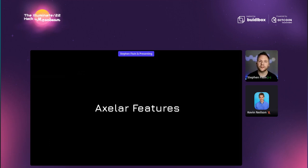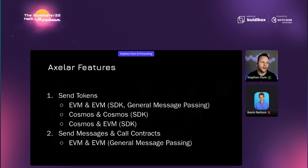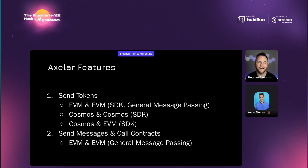Let's dive into the features — what it actually feels like to be a developer interacting with the Axelar network. There are two main categories of use cases. First is sending tokens, which is well understood: you've got EVM-to-EVM, Cosmos-to-Cosmos via IBC with its own limitations, and crossing different classes of chains like Cosmos and EVM. That's been Axelar's bread and butter from the start. Then you've got a new frontier: opening that up to any message — any contract call across any chain. That's the world we want to live in: building really powerful chain-agnostic dApps. Today we have generalized message passing between EVM chains, with more coming.